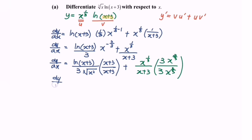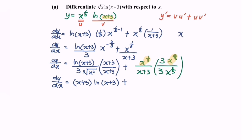So dy/dx equals (x + 3) multiplied with (x + 3), plus — using the indices rule — x to the power of 1/3 multiplied with x to the power of 2/3 gives x to the power of 1/3 plus 2/3, which equals x to the power of 1.